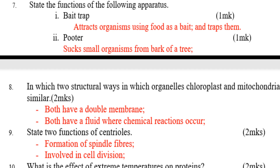Question eight: state two structural ways in which chloroplasts and mitochondria are similar. Number one: both have a double membrane. Number two: both have a fluid where chemical reactions occur. Question nine: state two functions of centrioles. Number one: formation of spindle fibers. Number two: involved in cell division.